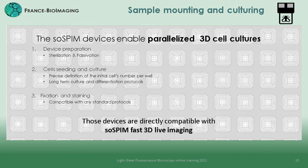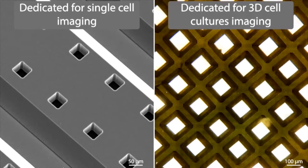Finally, we will see that further manipulations such as fixation and staining can be done directly in those culture supports. And more importantly, we then only need to position the SOSPIN support onto our inverted microscope to image in 3D and over time our samples, limiting their manipulation to a maximum. So let's see the SOSPIN device preparation and cell seeding steps.